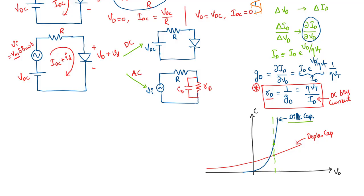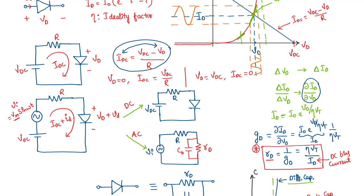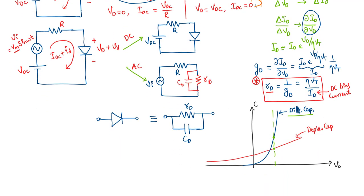The small signal model of a PN junction diode can be represented as a small signal diode resistance RD in parallel with the capacitance of the diode CD or CJ. When solving problems, if the data corresponding to capacitance is not given, you can neglect it and just take RD for AC analysis. But in reverse bias, the current is fairly independent of the voltage, so the resistance offered by the diode for an AC signal will be infinite — it becomes an open circuit for AC analysis. If capacitance values are given, you take the depletion capacitance.